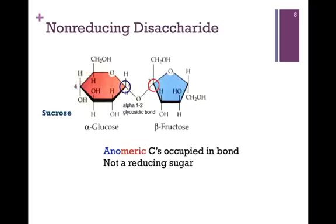A good example of a non-reducing disaccharide is sucrose. Sucrose is a disaccharide composed of glucose and fructose. Let's see where the bond is that connects these two sugars. On the left, circled in blue, we have the anomeric carbon — carbon number one on glucose — and that's forming a glycosidic bond with carbon number two of fructose, highlighted by the red circle. Each of these, carbon number one on glucose and carbon number two on fructose, are anomeric carbons. These are both occupied in forming that glycosidic bond, and therefore this is a non-reducing sugar. Neither of these ring structures can open, and therefore they cannot reduce Benedict's reagent.